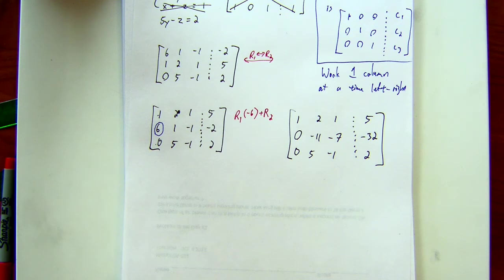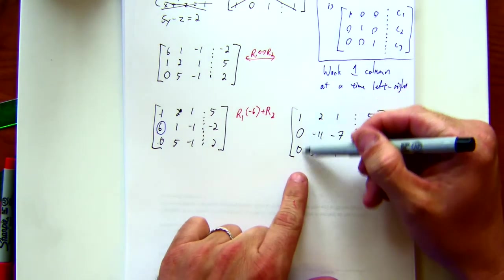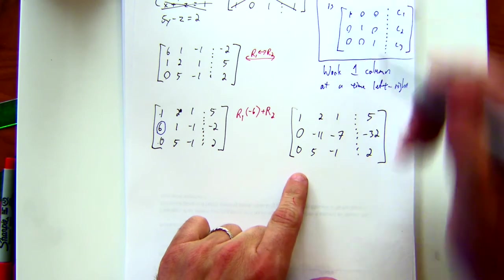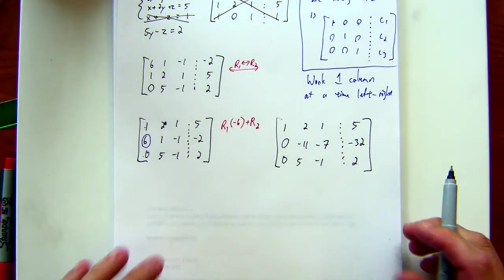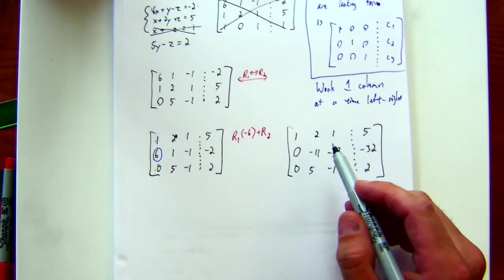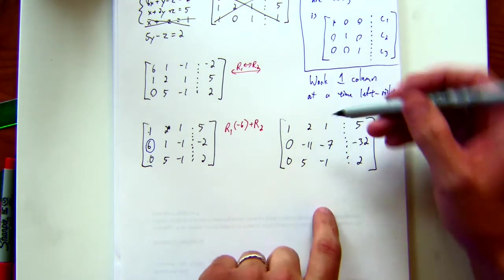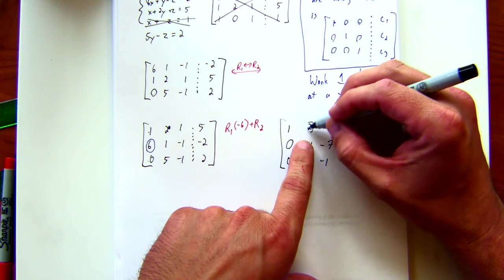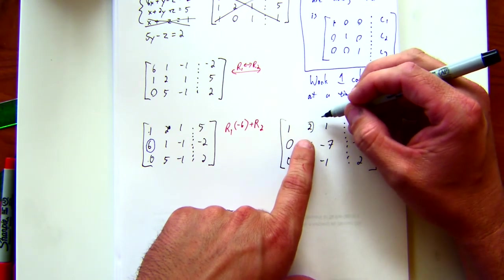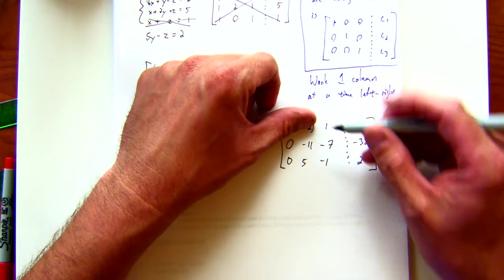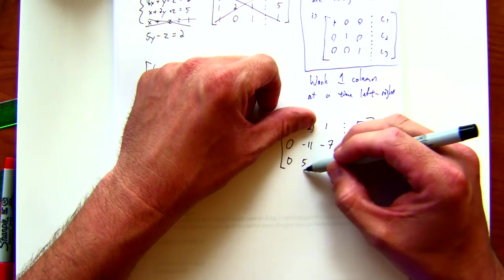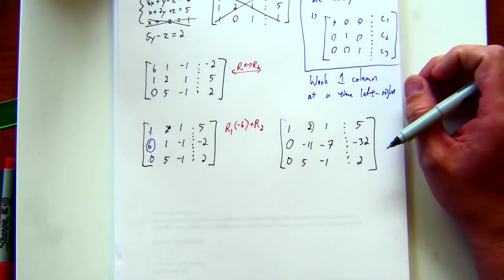Everybody okay? Any questions? All right. So now we're working one column at a time left to right. Notice this column is in good shape. One, zero, zero. So now the next thing that I want to do is I want to pick one of these two columns, and I want to make this a one here. Now I know that at some point, this one is going to have to be a zero. So I can't just make it a zero by multiplying. The only option now I have to work with is I can either take this one, or this one and try to make it a one. Which one do you want to do?